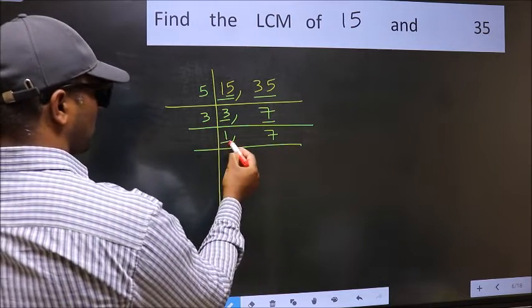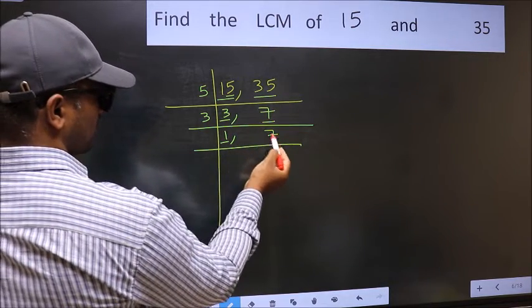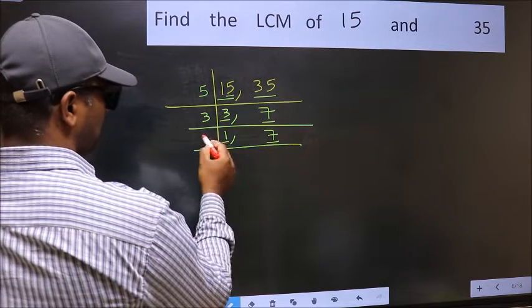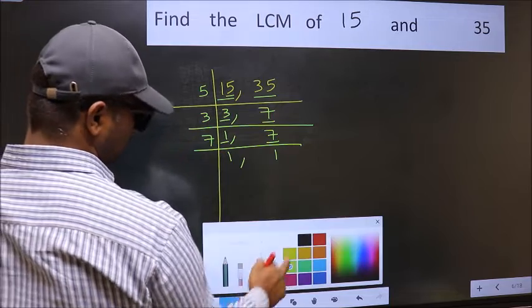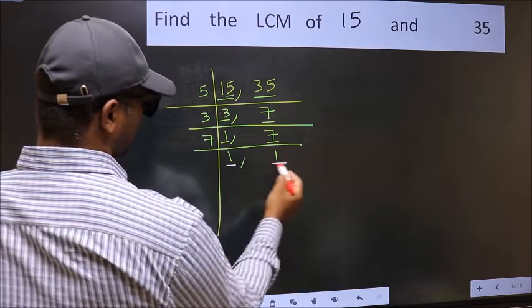Now we got 1 here, so focus on the next number 7. 7 is a prime number, so 7 times 1 is 7. So we got 1 in both the places.